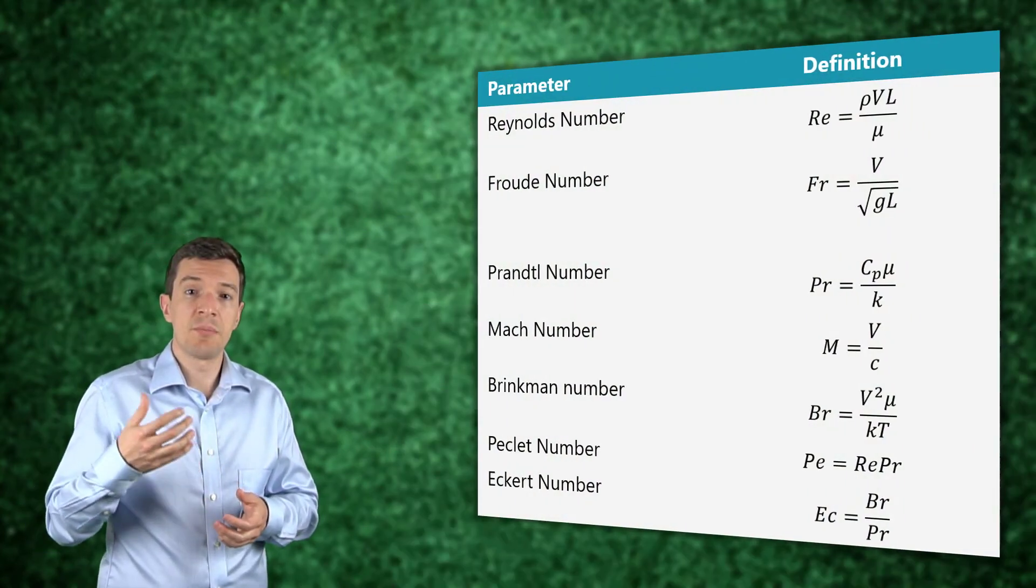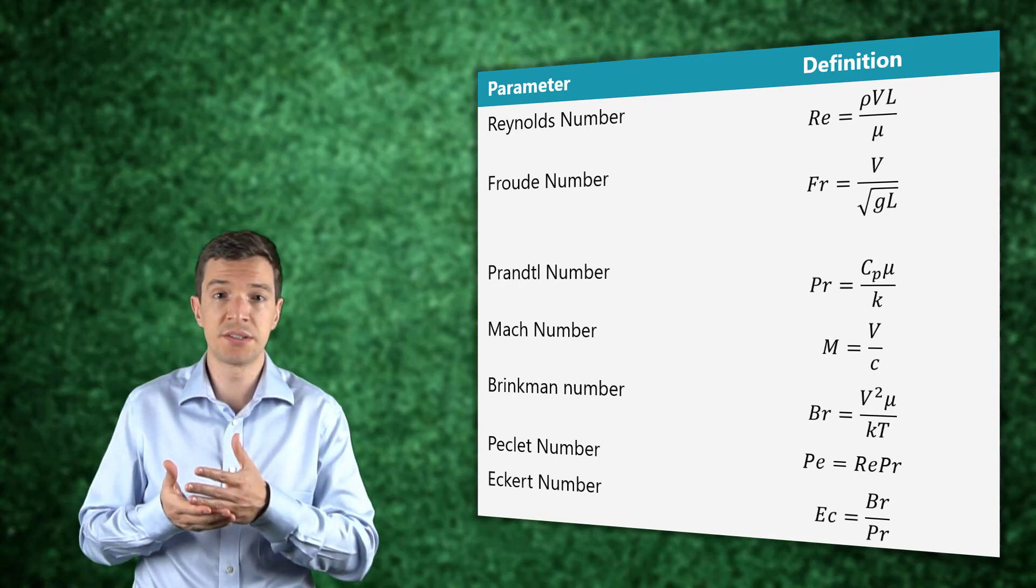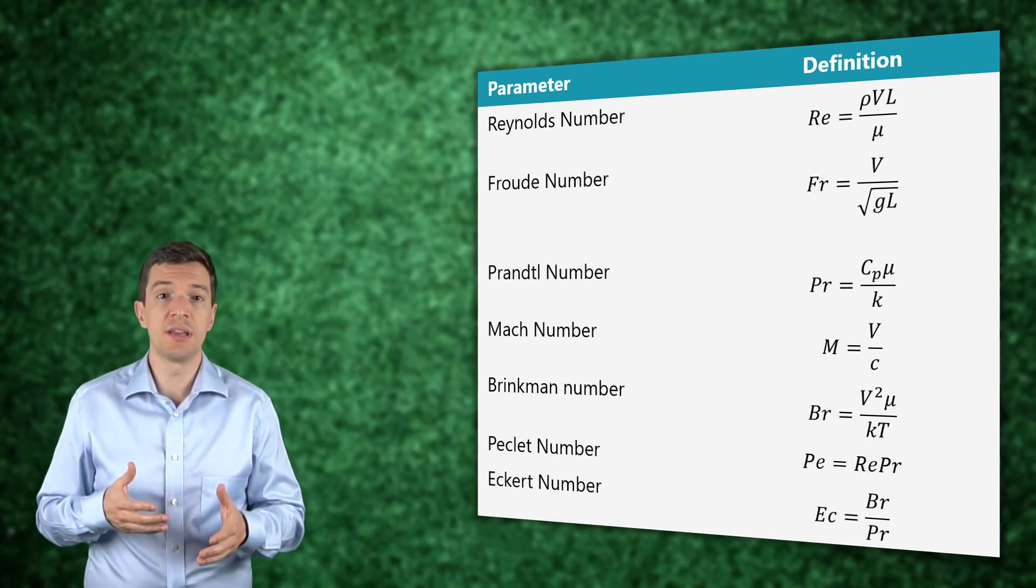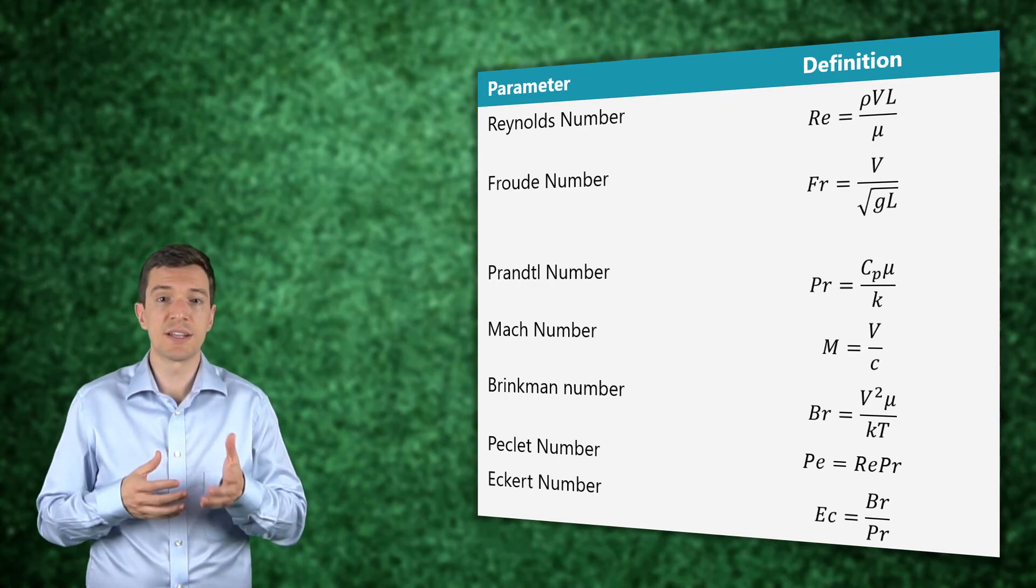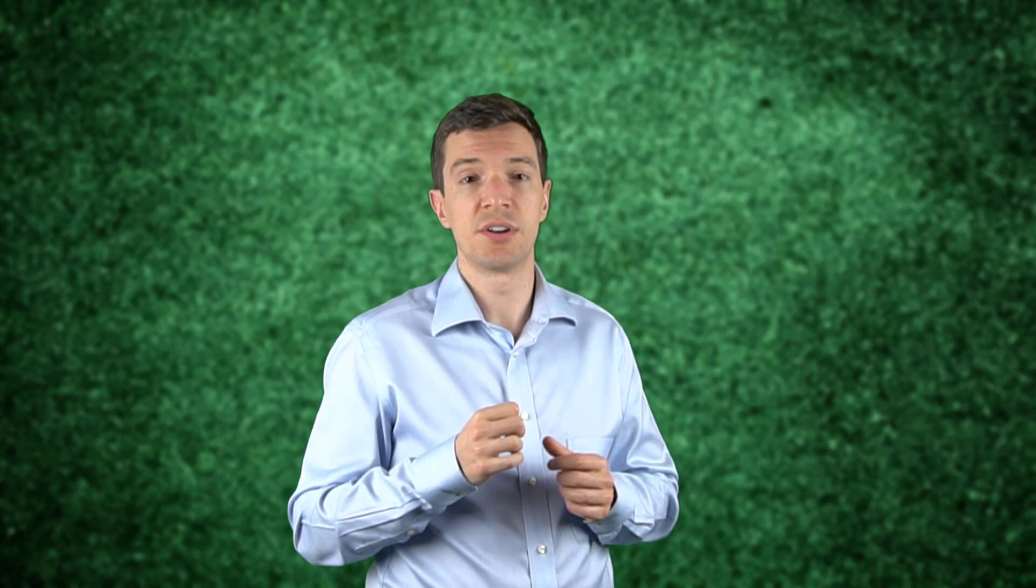The Buckingham Pi theorem can be used to define the dimensionless parameters that we have seen in the previous lesson, such as the Reynolds number or the Prandtl number, but without the process of non-dimensionalizing the governing equations.